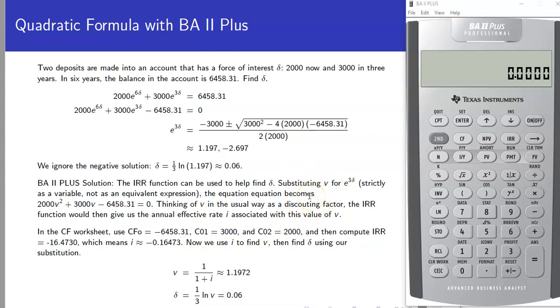Let's say we go back up to our quadratic equation that we were solving and just substitute in a v for the e to the 3 delta piece. Now, strictly as a variable, not initially thinking of v as the discounting factor piece, literally just a straight substitution as a variable. Then we've got a quadratic equation. But now if we think about it as a discounting factor, we can use the internal rate of return functionality of the calculator to be able to solve for the annual effective interest rate of i that's associated with that particular v.